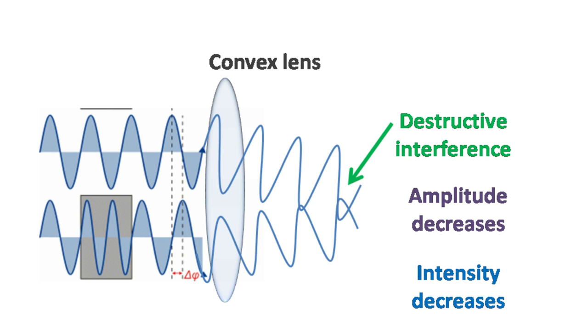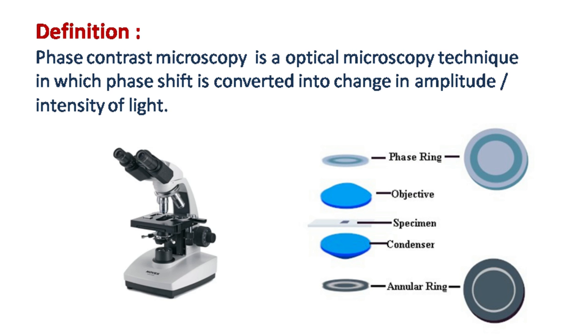So phase contrast microscopy is an optical microscopy technique in which phase shift is converted into change in amplitude or intensity of light.